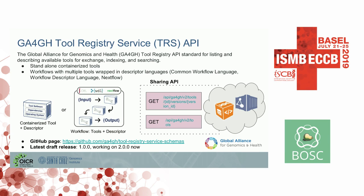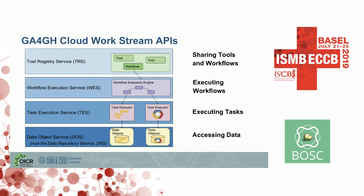Through collaboration with the GA4GH — the Global Alliance for Genomics and Health — Dockstore helped draft the Tool Registry Service API standard. TRS defines a minimal, common, read-only API for listing and describing tools or workflows located in a given registry so that those entries can be exchanged, indexed, or searched by other services. By being TRS-compliant, Dockstore is placed into the GA4GH Cloud Workstream, which allows for the execution of workflows through WES endpoints, task execution through TES endpoints, and accessing data in the cloud through DRS, which was formerly called DOS.